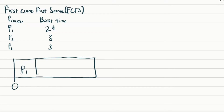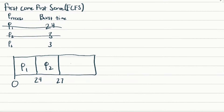So we write P1, and its burst time is 24, so it's going to execute for 24 milliseconds. Next in line is P2, and that executes for 3 milliseconds, so that's 24 plus 3 equal to 27. Then P3 is last and executes for 3 milliseconds as well, so 27 plus 3 equals 30 milliseconds.